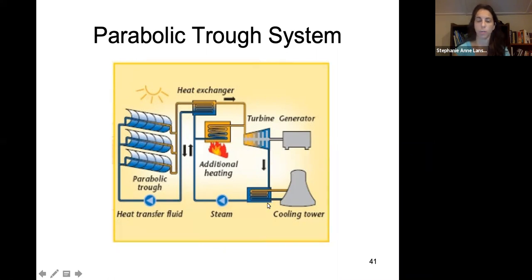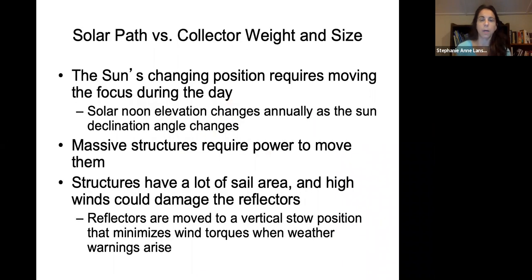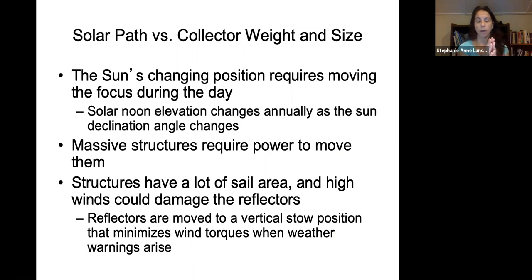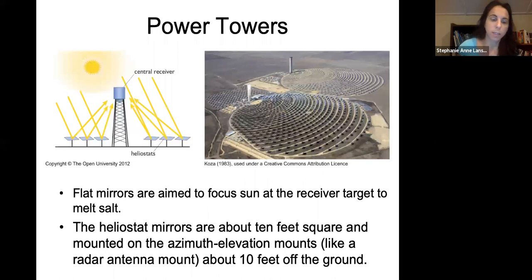The moving parts required to track the changing sun position do consume some power to move, but the system generates far more electricity than it uses. You do need to be aware of sail area and high winds; the troughs can be stowed down when weather is bad.